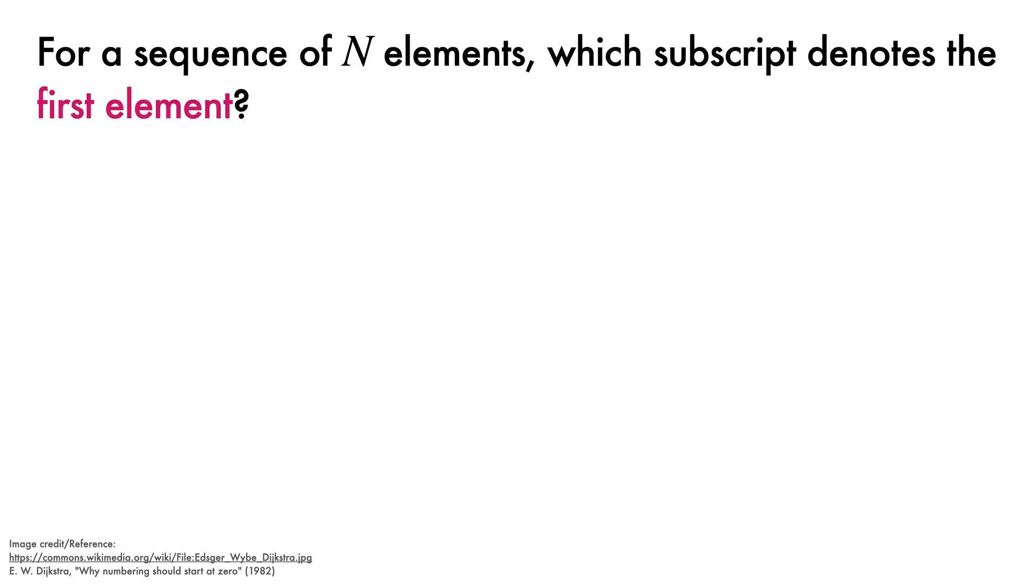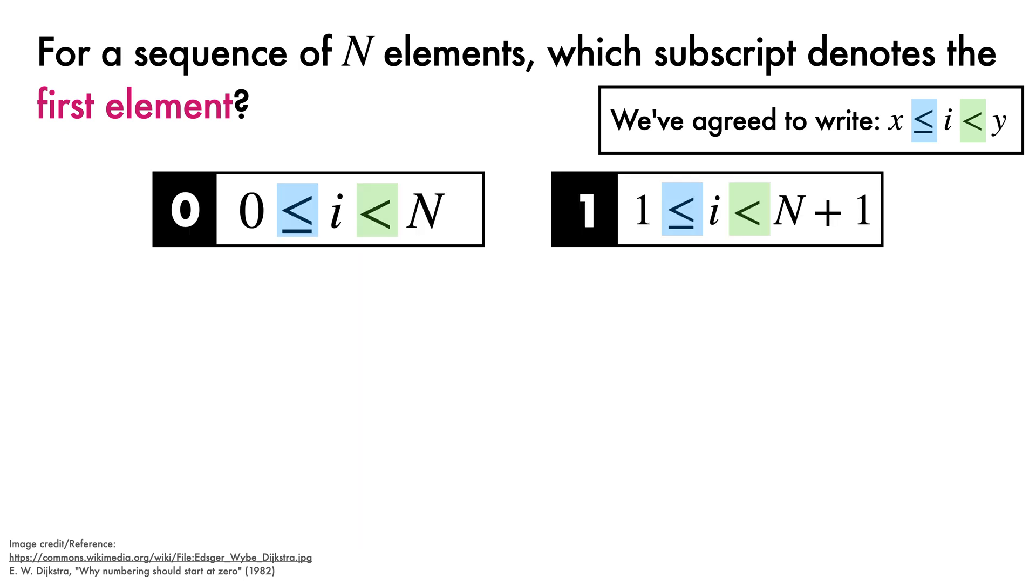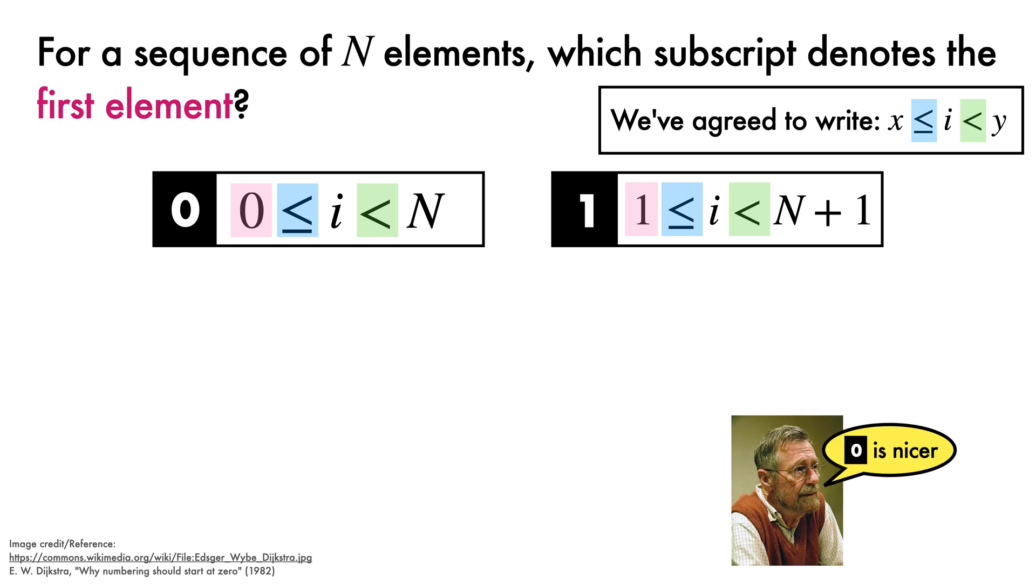Finally, we come to the key question. When we have n elements in a sequence, what subscript do we assign to the first element? Based on our previous discussion, we've agreed that we are going to write our sequence with a less than or equal to at the lower end, and a strict less than at the upper end. We therefore have two seemingly reasonable options, a range that starts at 0, and a range that starts at 1. The observation given here by Dijkstra is that option 0 is nicer, so we should choose that.